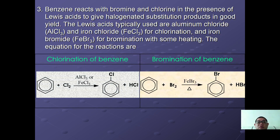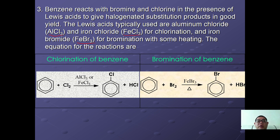Benzene reacts with bromine and chlorine in the presence of Lewis acids to give halogenated substitution products. The Lewis acid typically used here is aluminium chloride or iron(III) chloride for chlorination, and iron(III) bromide for bromination.